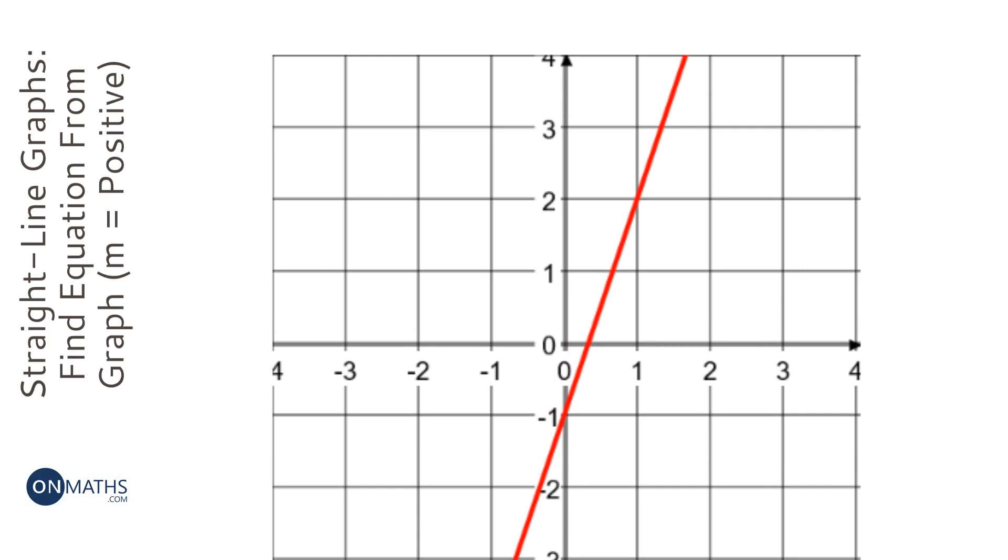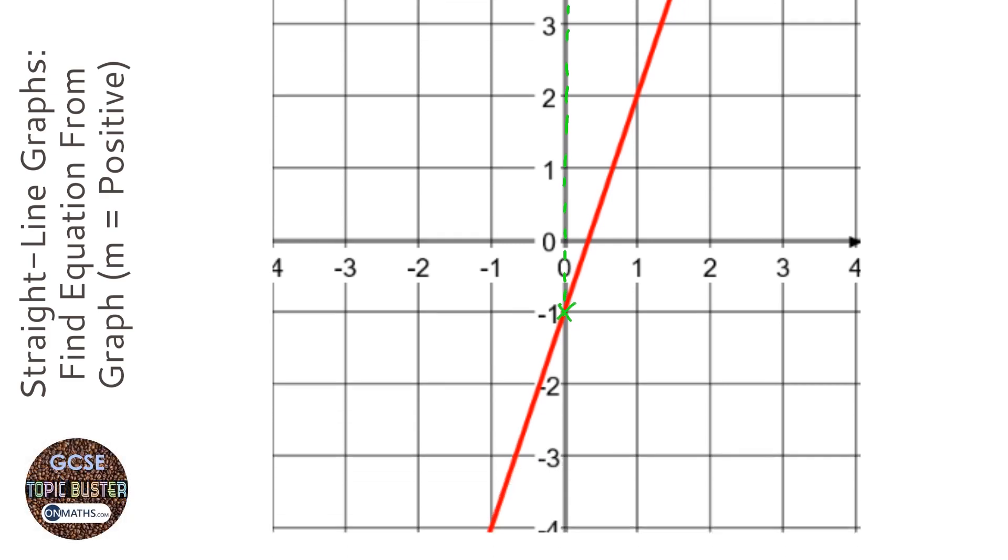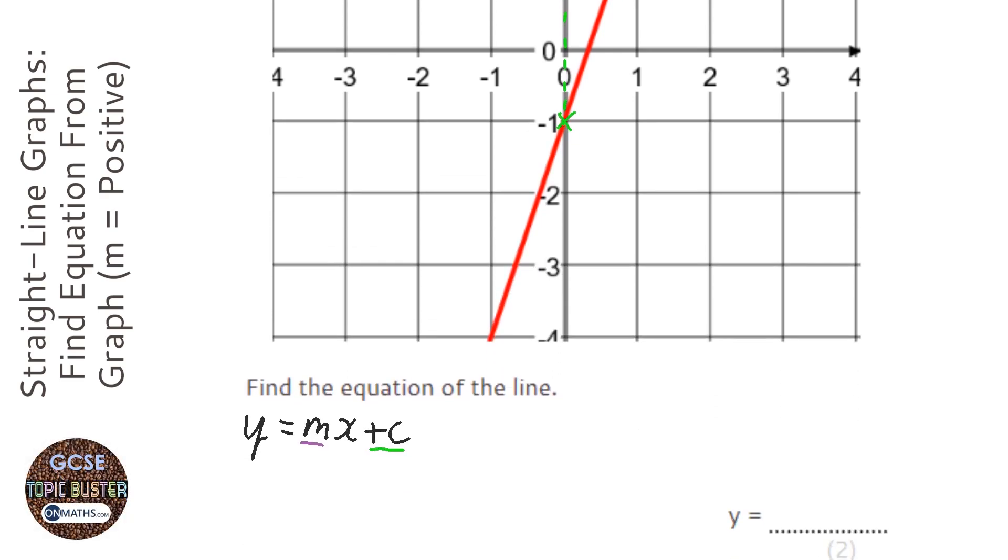Now c is the easier one to find because you just go to the y-axis and just keep going down till you hit the line, which is here. And that tells you what the c is, which is going to be minus 1. So it's y equals mx plus minus 1, which just makes minus 1.